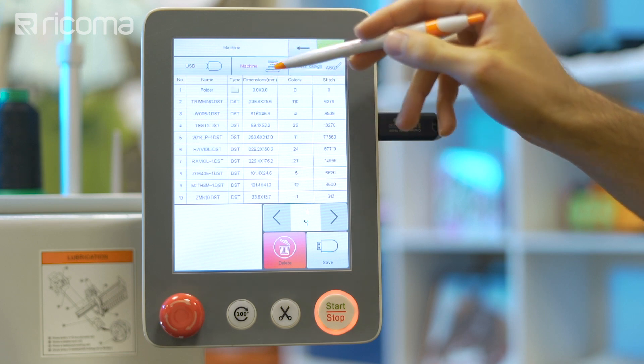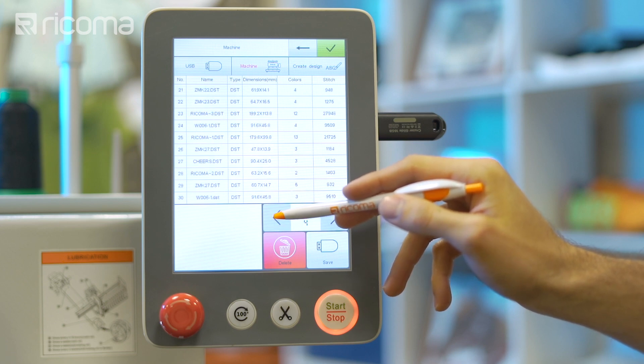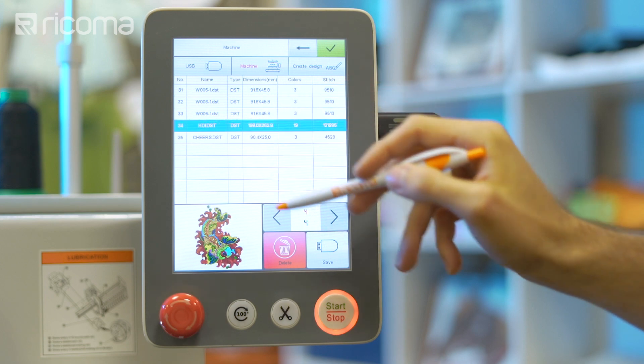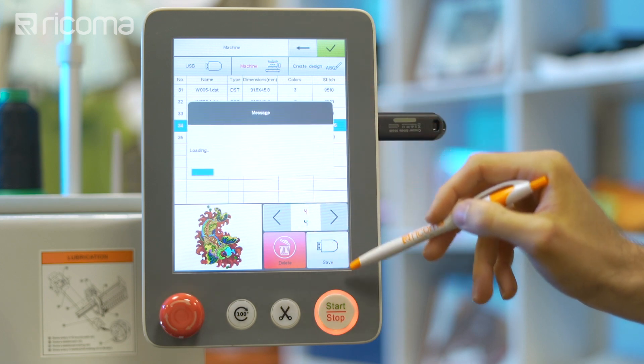Next, click on the embroidery machine's memory icon and select the design you wish to export from the list of designs in the machine's memory. Last, select the save key to transfer the file to your USB's memory.